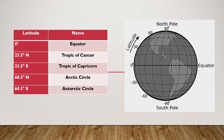Now that you know the five latitudes with special names, take note of the equator. This is the center of our globe, and this is the reference line — the basis for determining the northern and southern hemispheres. When you say northern hemisphere, it is the area above the equator up to the north pole.